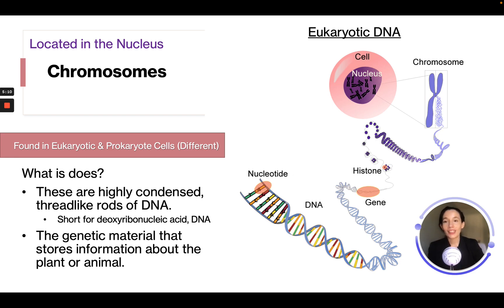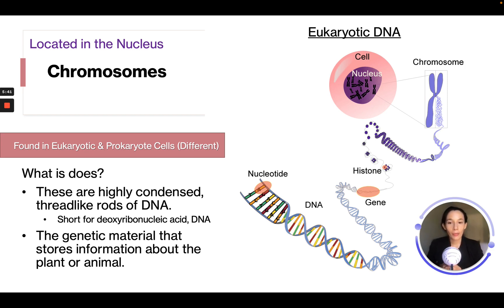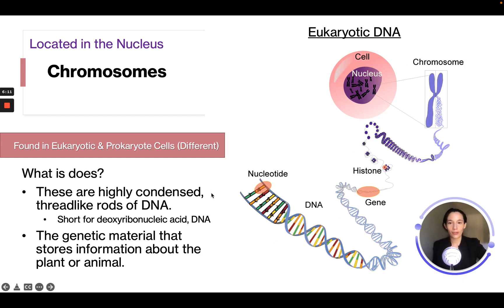Chromosomes are located inside the nucleus in eukaryote cells. In prokaryote cells, chromosomes exist but are just floating inside the cell — not enclosed in a nucleus. Chromosomes are highly condensed thread-like rods of DNA, which stands for deoxyribonucleic acid. They are the genetic material that stores information about plants and animals. If we unwind a chromosome, it breaks down into genes and DNA, which are made of nucleotides.